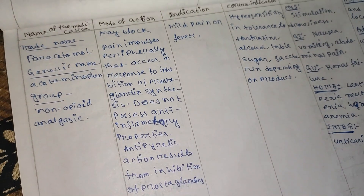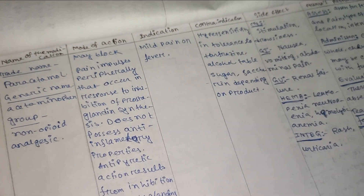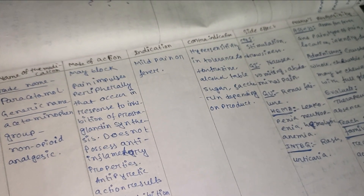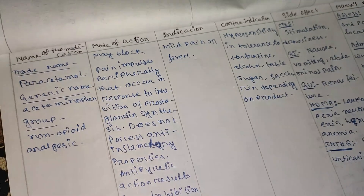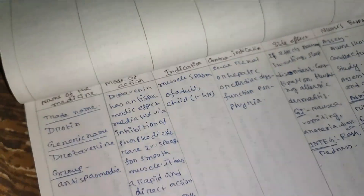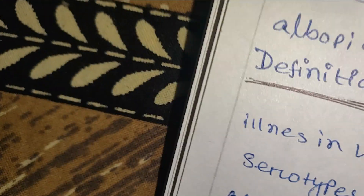For each medicine, provide the group name, mode of action, indication, contraindication, side effects, and nurse's responsibility. An explanation should be given for each medication prescribed as part of the treatment.